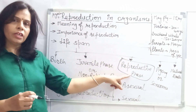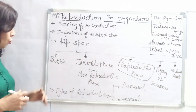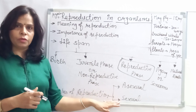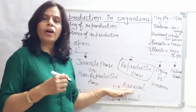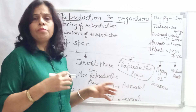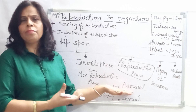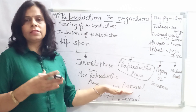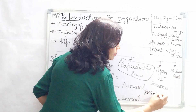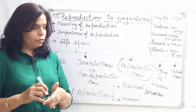Now, what are the types of reproduction? Reproduction is of two types: asexual reproduction and sexual reproduction. In asexual reproduction, only one parent is involved. In sexual reproduction, two parents are involved. Simple unicellular organisms exhibit asexual reproduction — a single parent divides to give rise to another organism. An example is amoeba. In sexual reproduction, two parents — one male and one female — are involved.